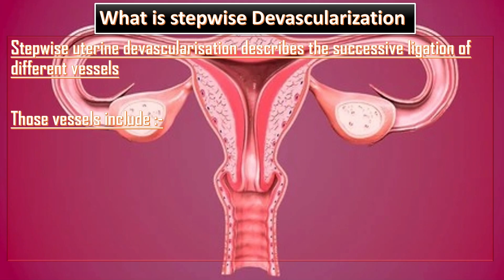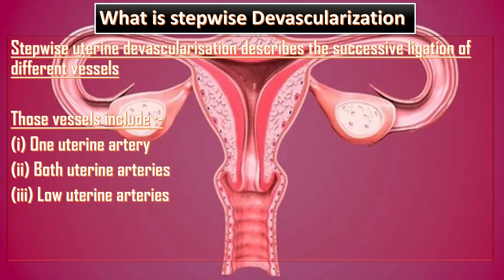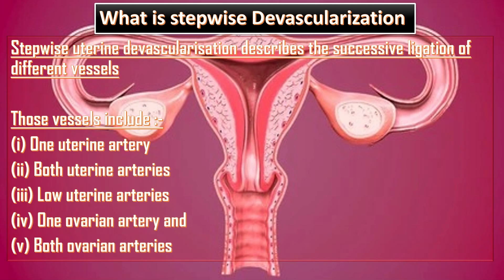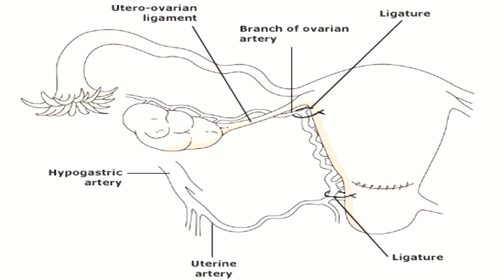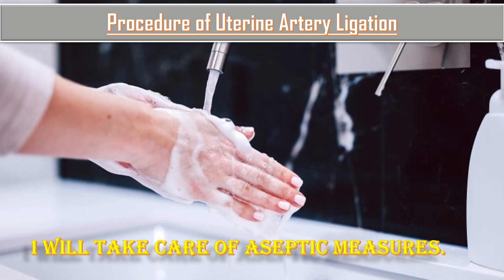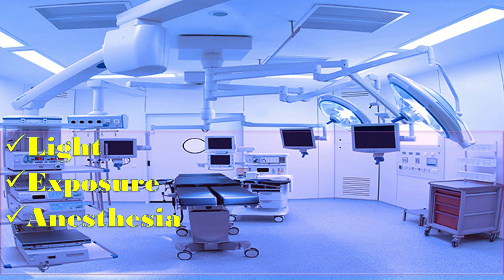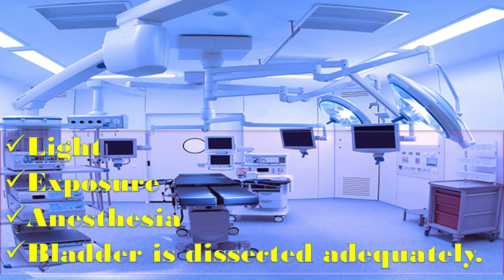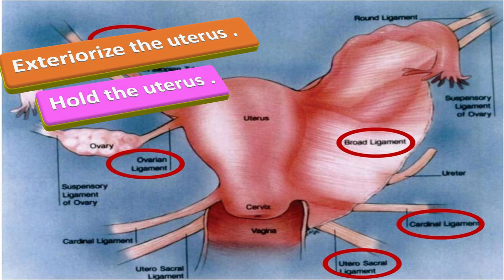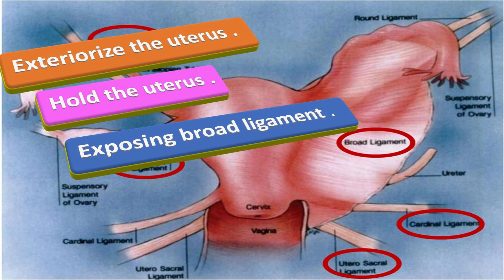The vessels ligated in stepwise devascularization include one uterine artery, both uterine arteries, low uterine arteries, and one or both ovarian arteries. For uterine artery ligation, take aseptic precautions. Under good light and anesthesia, ensure the bladder is dissected and retracted downward. Exteriorize the uterus and ask the assistant to hold the uterus, pulling upward with the fundus tilted to the opposite side to expose the lower part of the broad ligament.